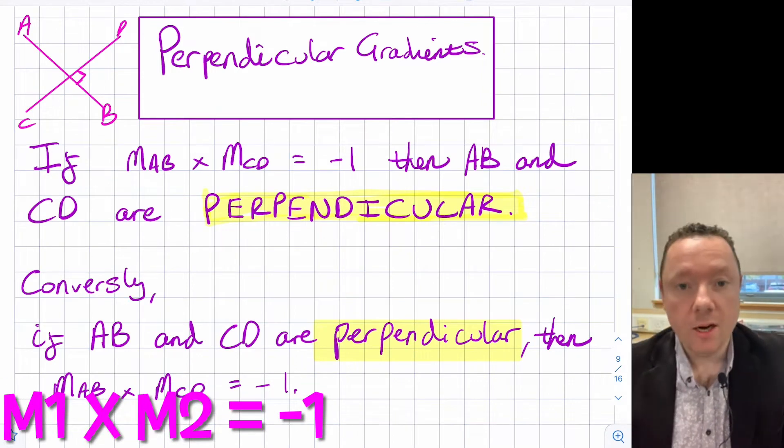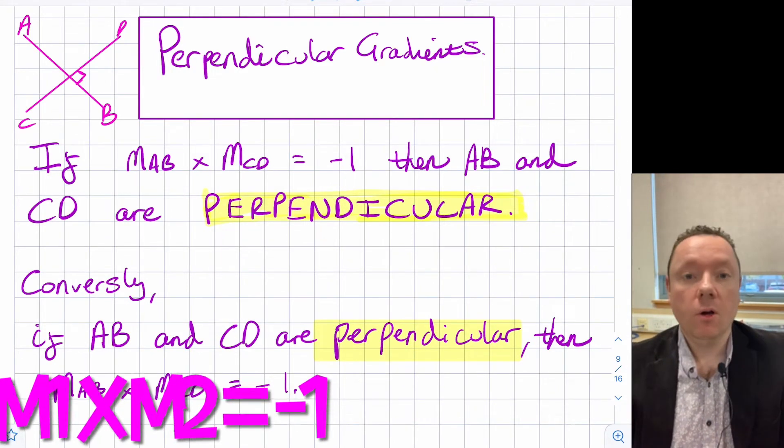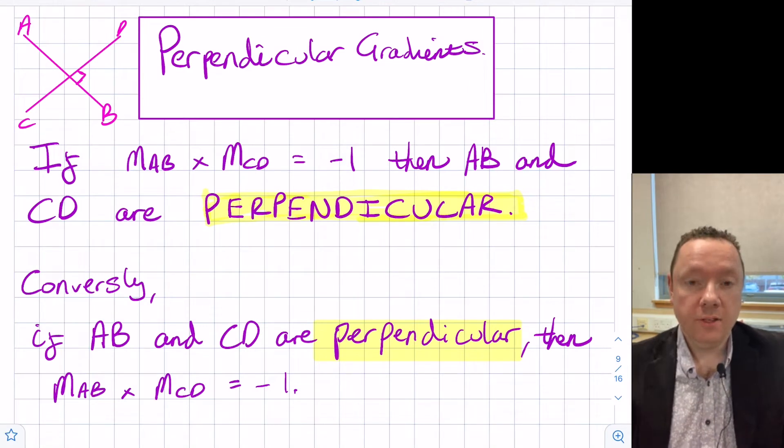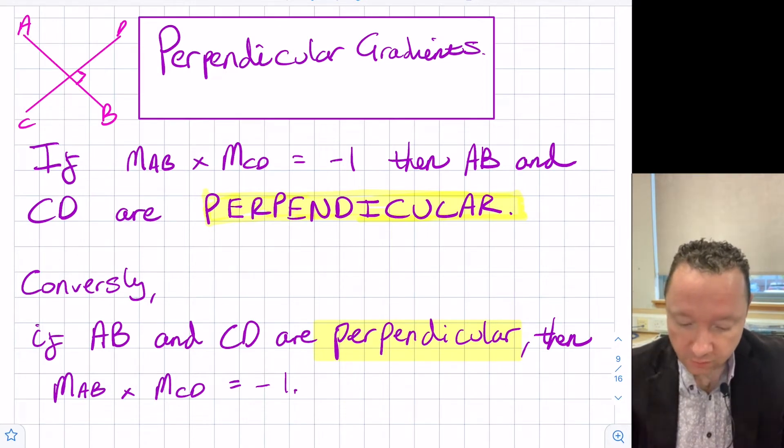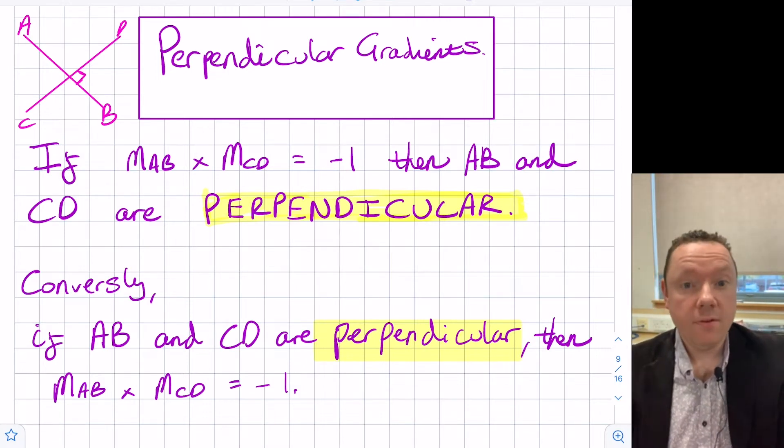Mr Clown here from Clown Maths. Today we're going to be looking at perpendicular gradients. We're going to see how if you take two lines which are at right angles to each other, then the gradients times together to give minus one. We've got a couple of lines here at right angles to each other. So the theorem is, if you times the two gradients together and you get the answer minus one, then you can say that the lines are perpendicular. They are at right angles to each other.